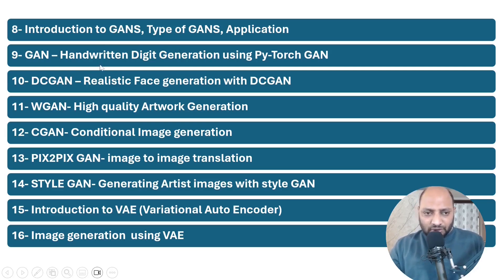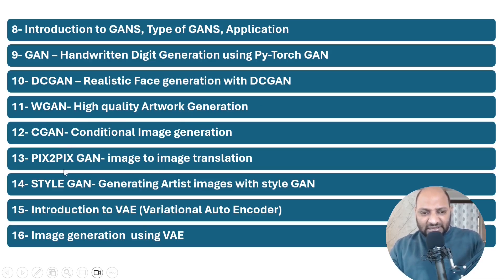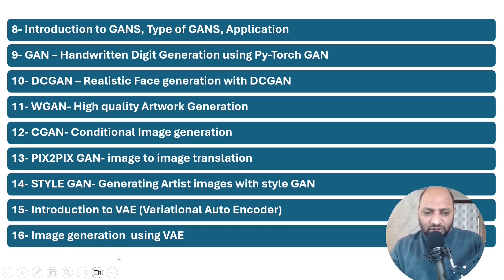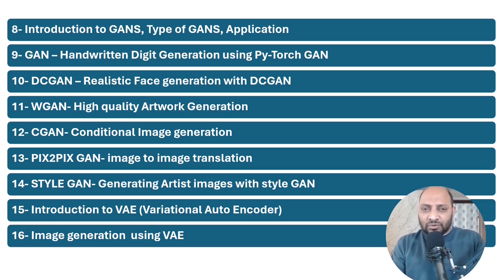Project: handwritten digit generation using PyTorch GAN. Then DC-GAN for realistic face generation, W-GAN for high quality artwork generation, C-GAN for conditional image generation, Pix2Pix GAN for image-to-image translation, StyleGAN for generating artist-style images, introduction to VAE (Variational Autoencoder) and image generation using VAE. Finally, how to create text-to-image and text-to-video using prompts.